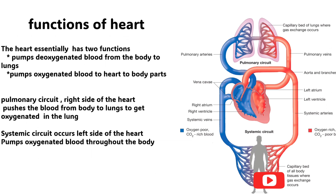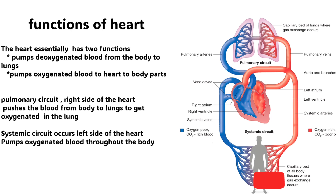Coming to the functions of the heart, the heart essentially has two functions. First, it pumps deoxygenated blood from the body to the lungs. After oxygenating the blood, it pumps the oxygenated blood back to the heart and from there to the body parts. All this pumping occurs through two circuits: the pulmonary circuit and the systemic circuit. The pulmonary circuit occurs on the right side of the heart, whereas the systemic circuit occurs on the left side.